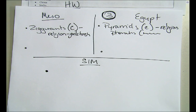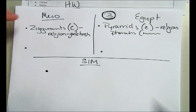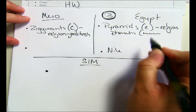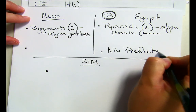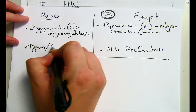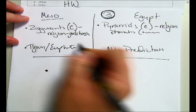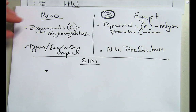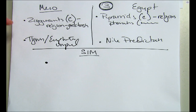What are some differences? The Nile River is predictable, while the Tigris and Euphrates are unpredictable. Now let's get some similarities. What do we have for similarities?